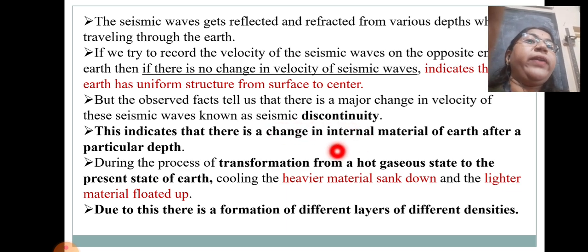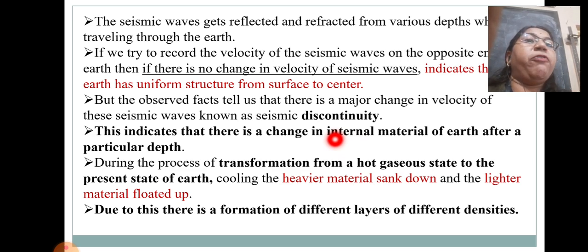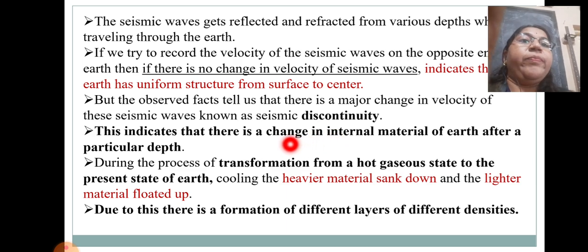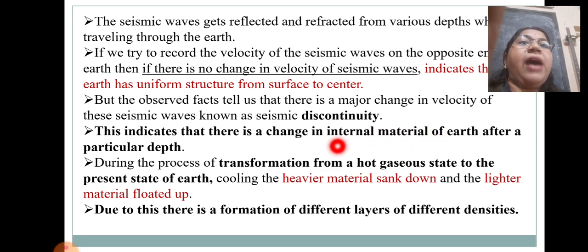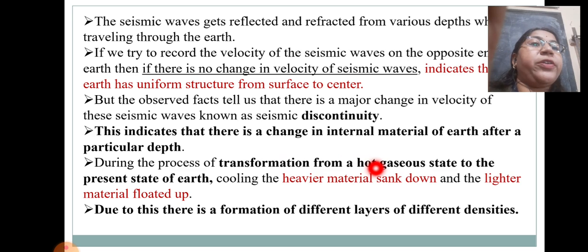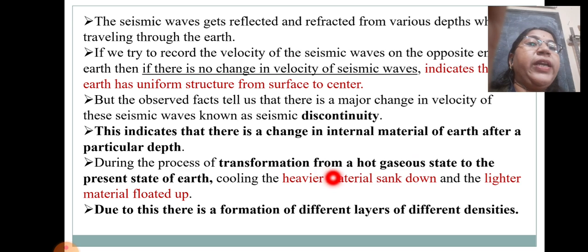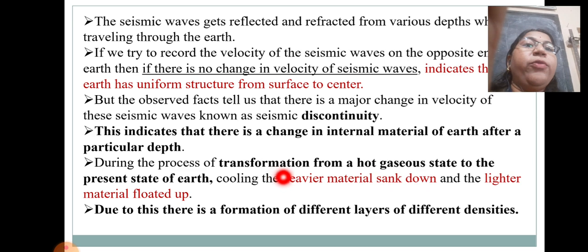The Earth does not have uniform velocity of seismic waves — the velocity may vary and is not constant, indicating change in the internal material of the Earth after a particular depth. During the process of transformation from a hot gaseous state to the present state of Earth, the heavier material sank down and the lighter material floated up.